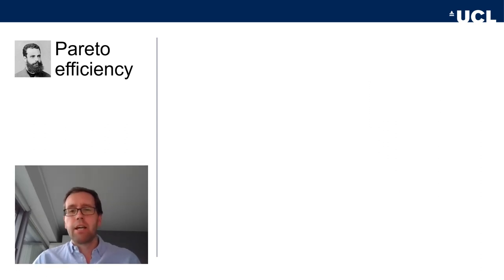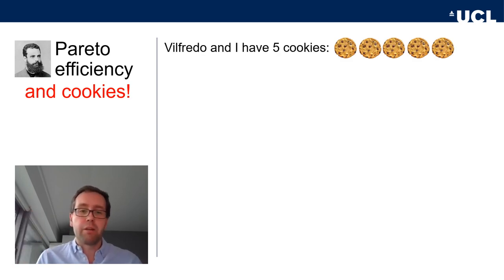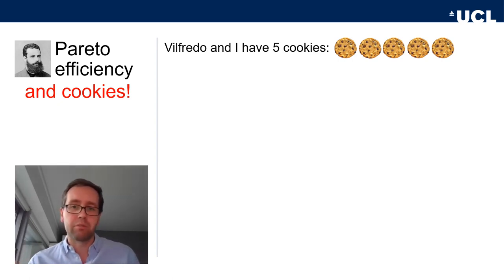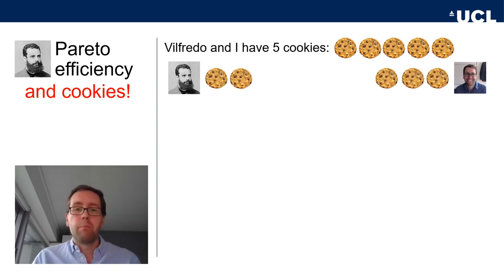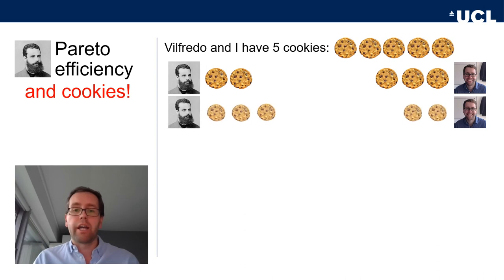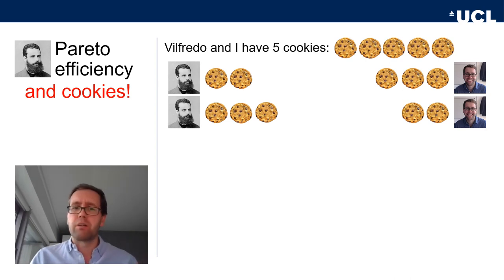The best way to think about Pareto efficiency is cookies. Think of Wilfredo and me having five cookies in a box and choosing how to allocate them. Wilfredo can have two cookies and I can have three — that's a Pareto efficient allocation. Or I get two and Wilfredo gets three — also Pareto efficient. We could break a cookie in half and everyone gets two and a half — fair and Pareto efficient.